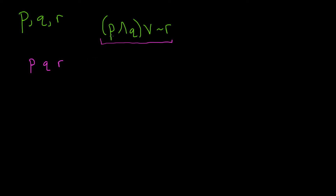The natural thing to do is to look at the P and Q piece — so P and Q. You can put parentheses here if you want; it makes it a little bit cleaner. And then not R.